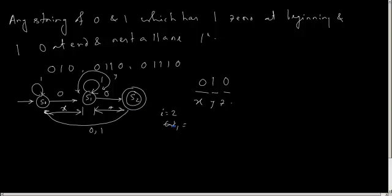Which means I can pump any number of ones into this finite automata and the resulting string, that is w1 is equal to x y to the power i z, will also belong to L.